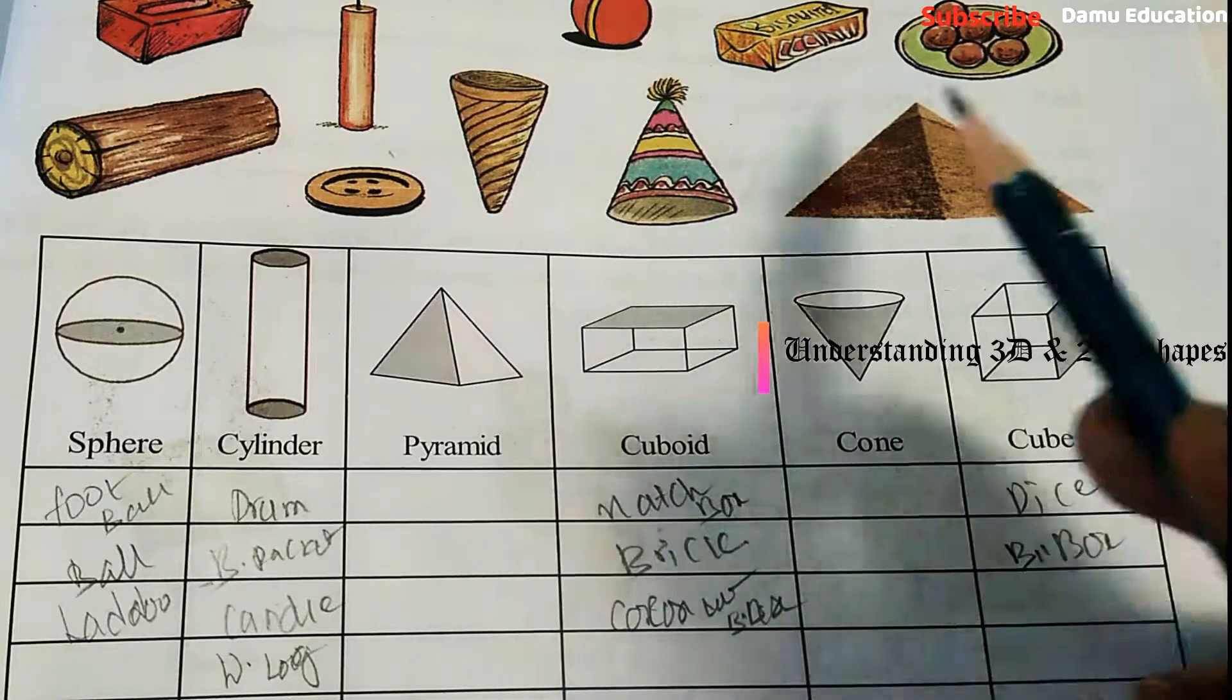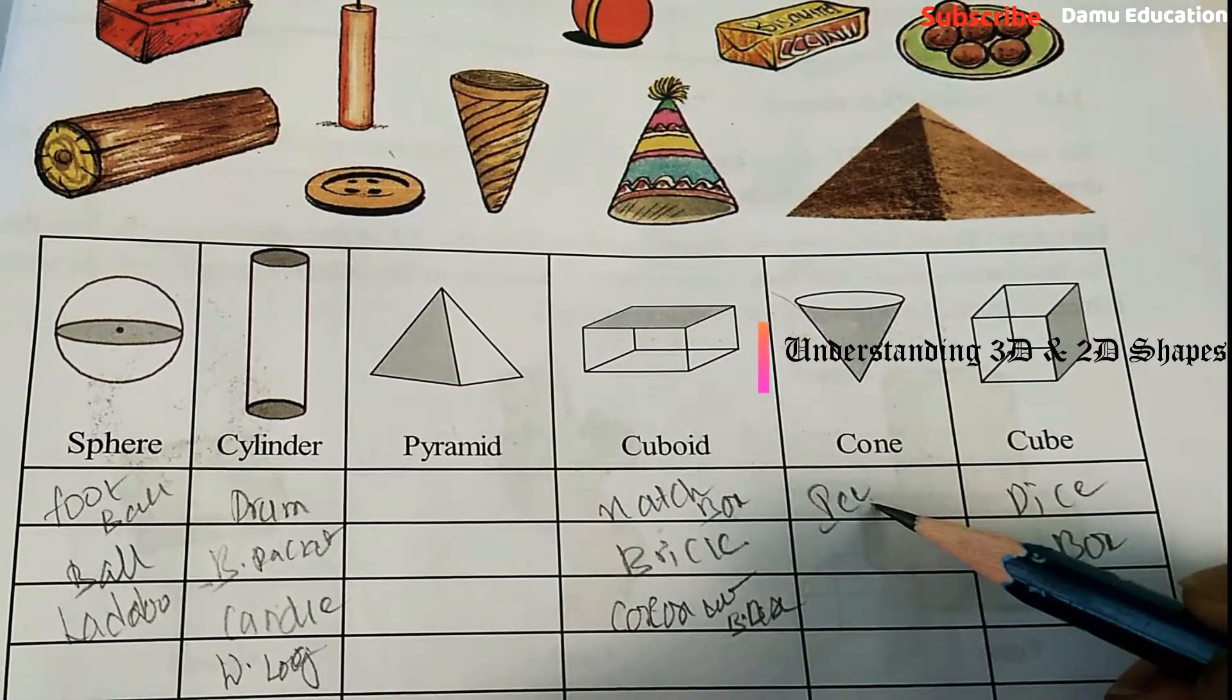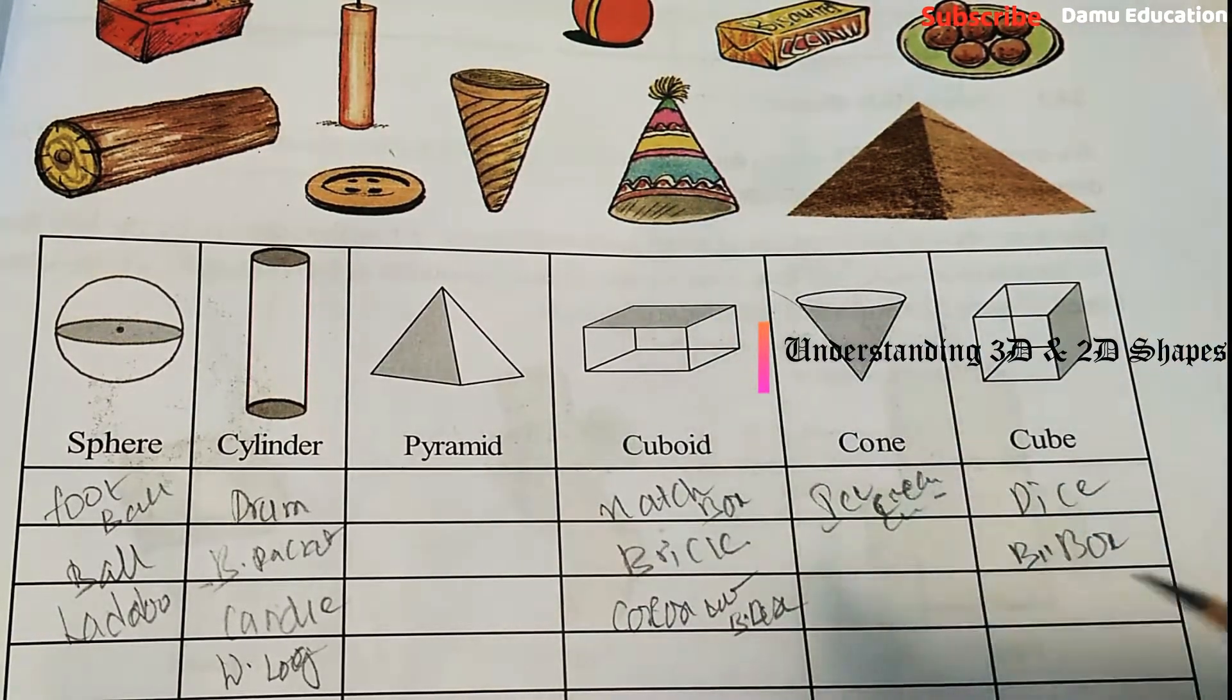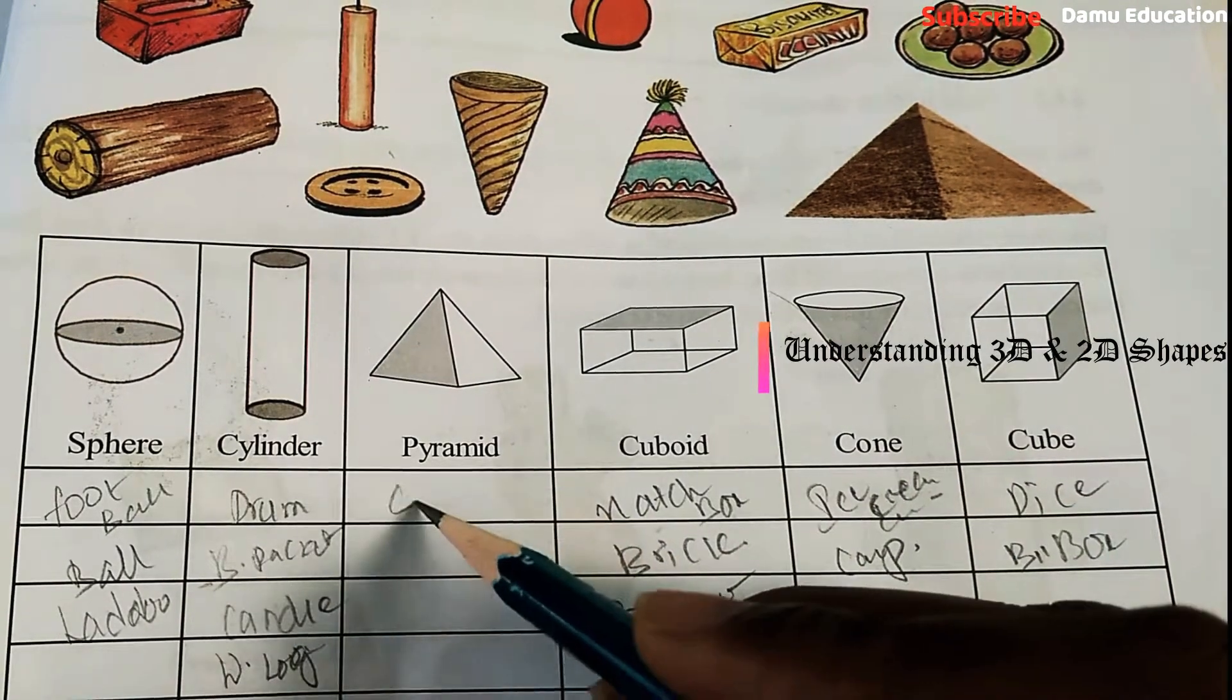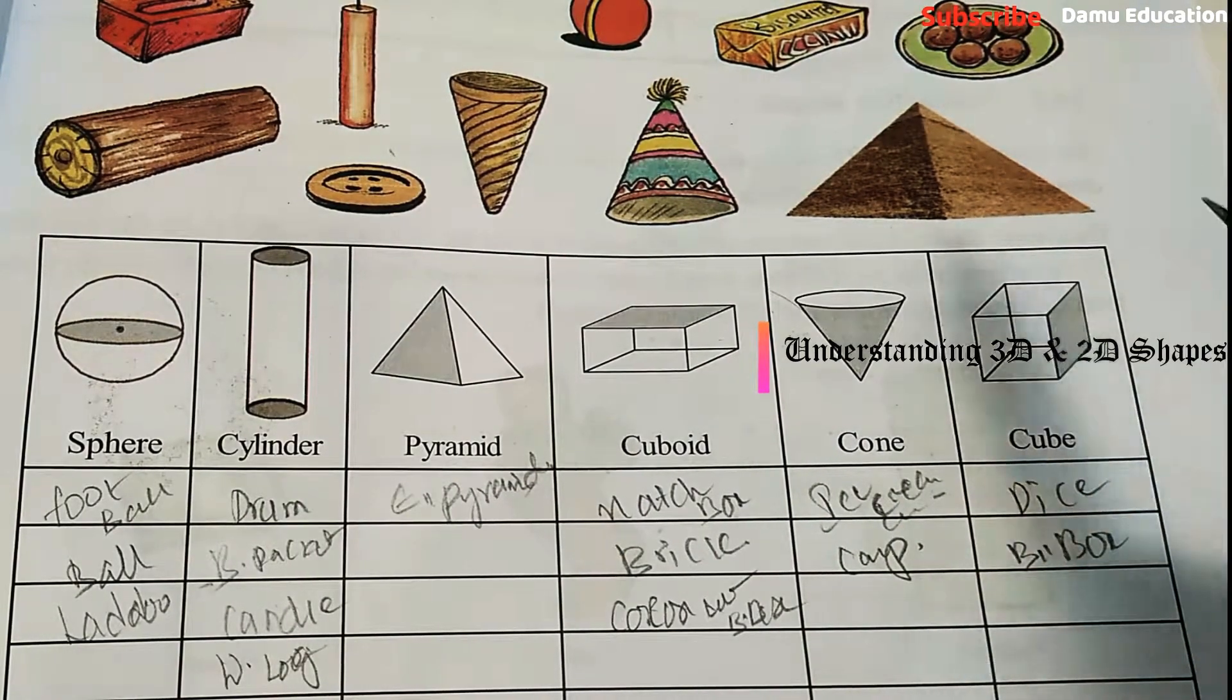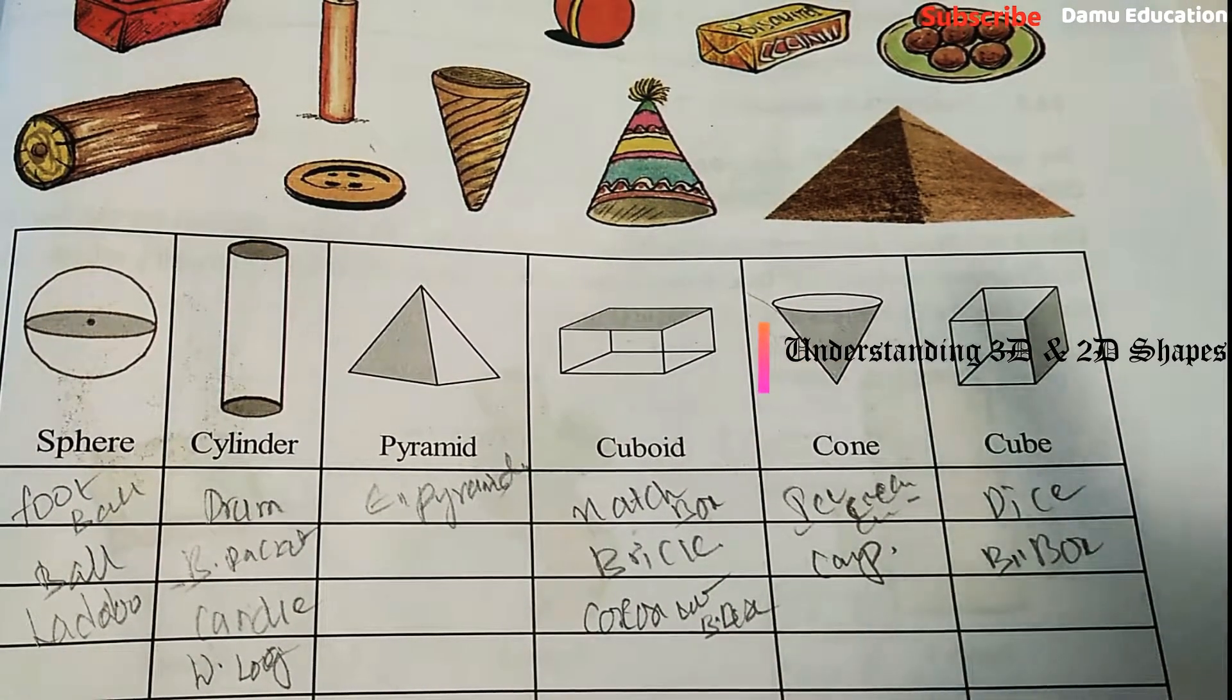Ice cream cup is cone shape - circular shape. Birthday cap is also cone shape. Then pyramid. These are the shapes which come under this question. Whatever is looking like that shape, we will take it as that one.